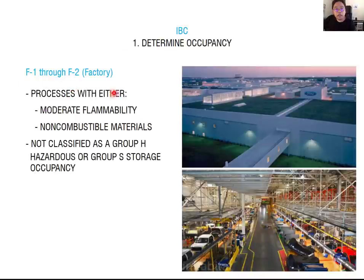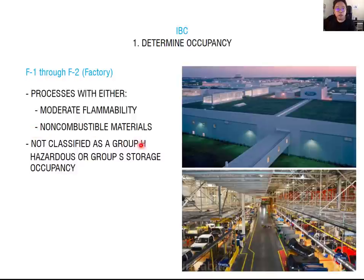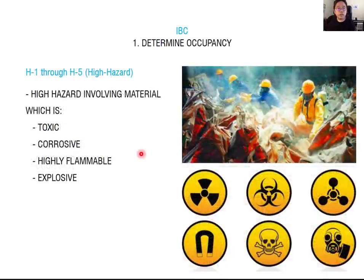F occupancy is for factory and industrial — places where goods are manufactured or repaired, mostly using moderate and non-combustible materials. Non-combustible means it does not catch fire easily, so F considers non-hazardous materials. If your factory uses more hazardous or explosive materials, it falls under H occupancy — high hazard. When your factory treats those types of materials, it must be under H occupancy.